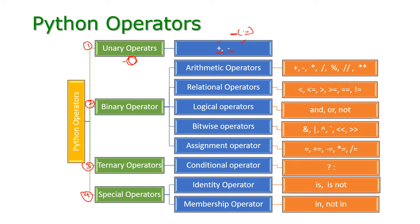The next one is binary operator. Binary operator means this operator will perform on two operands — it comes in between operand 1 and operand 2. Under this binary operator we are having arithmetic operator, relational operator, logical operator, bitwise operator, and assignment operator. First let us see the arithmetic operator.